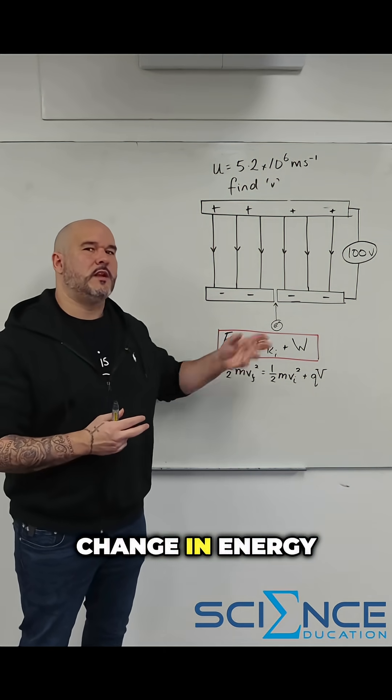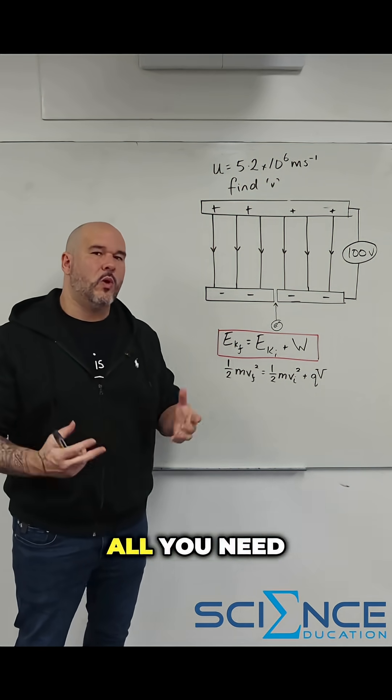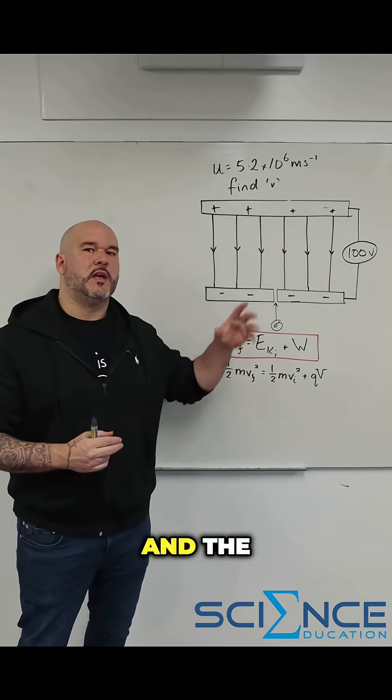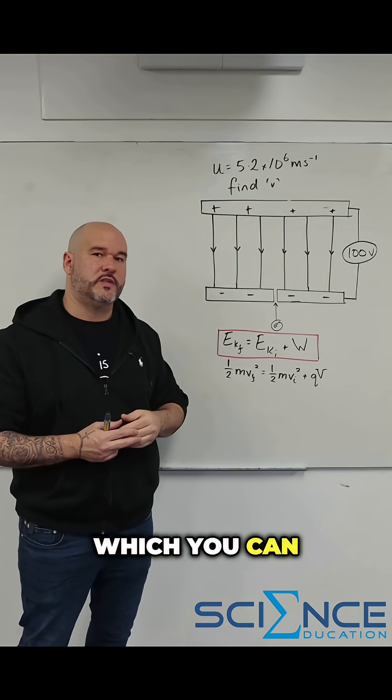So essentially to find the change in energy of the electron in the electric field all you need to know is the charge on the electron from your data sheet and the voltage through which it moves. Which you can see is given in the question.